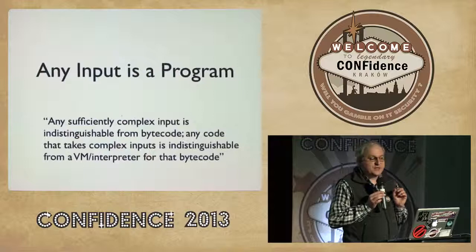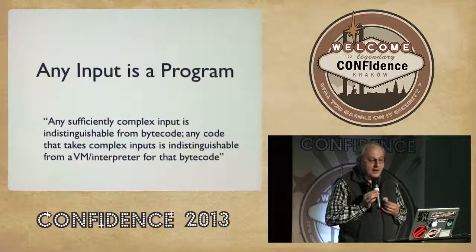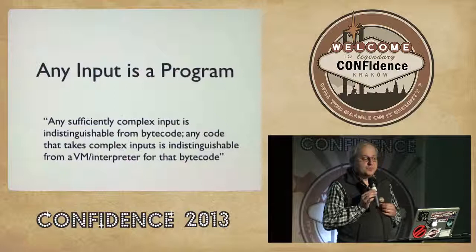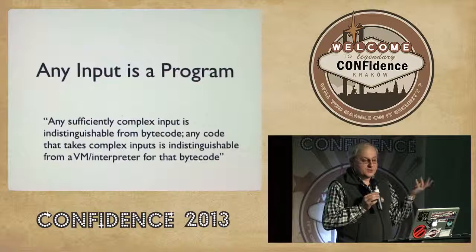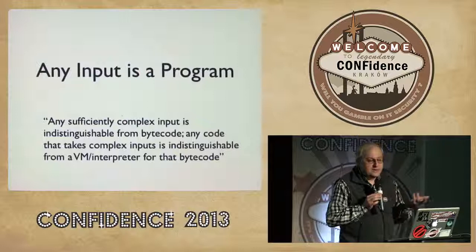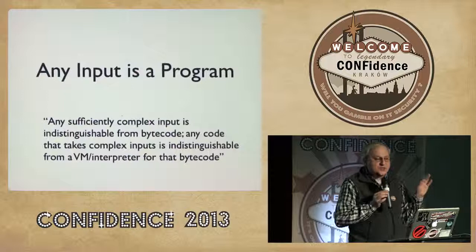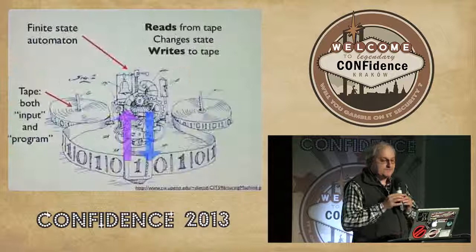Think about it. When you have a sufficiently complex input format or message format, it behaves — as exploiters know — indistinguishably from bytecode that gets consumed by some part of the target, and in the end just drives the target through the computation you care about. Typically ending in root shell, but maybe you want to corrupt a particular bit of memory or leak a particular address. If your input is sufficiently complex, the receiving code is really just an interpreter for it.